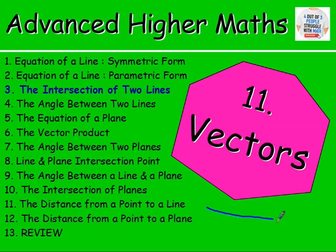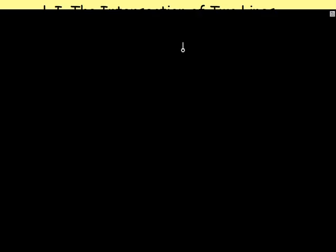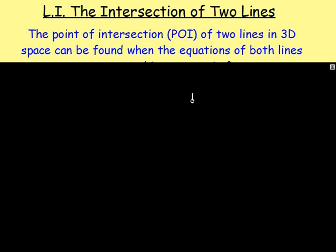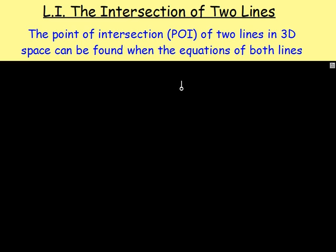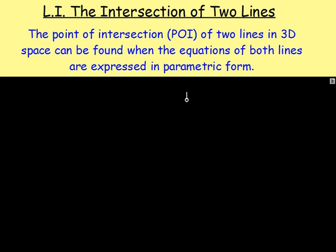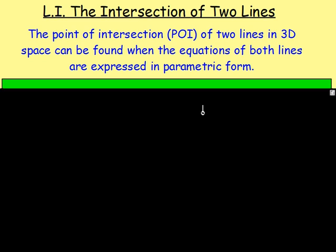What we're going to do now is look at two lines in 3D space that are crossing, and find the point of intersection. The point of intersection of two lines in 3D space can be found when the equations of both lines are expressed in parametric form.